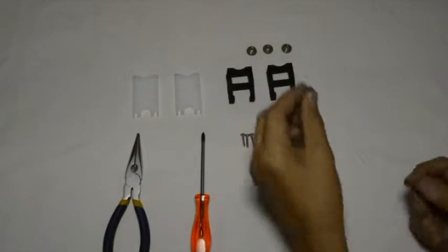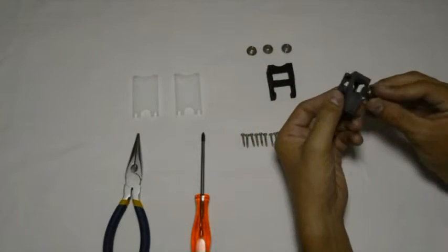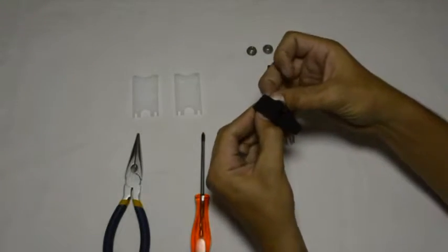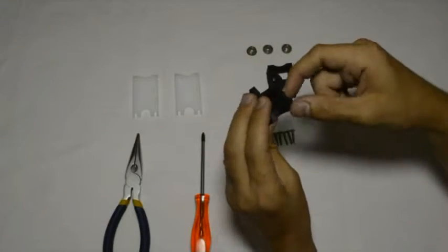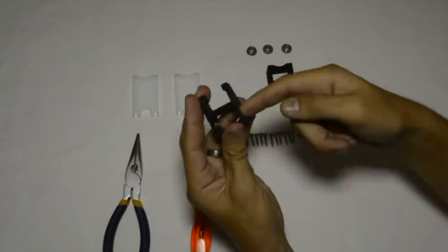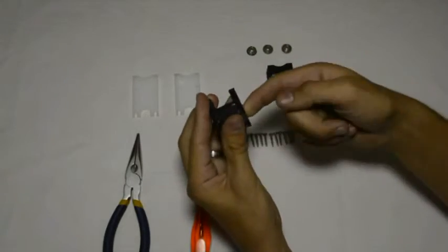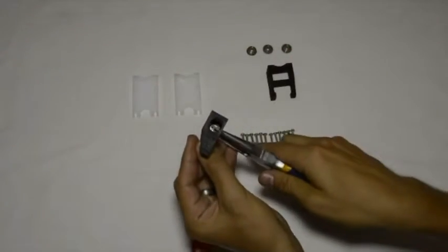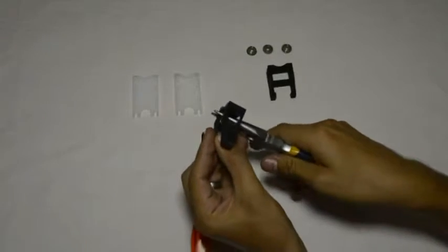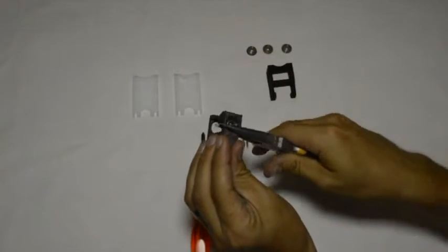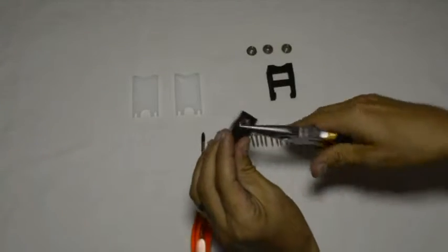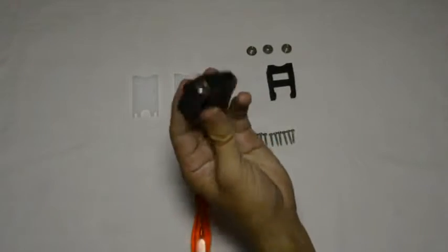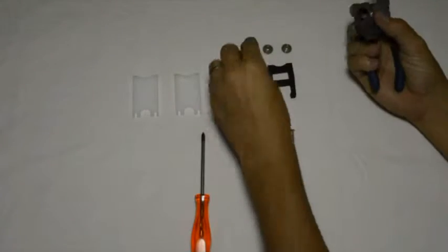Now we will take the flanged bearings and we will push them into the printed components from the inside. Make sure that there's no pieces of plastic that's sticking out inside the hole. And I like to take sharp nose pliers and push them so that they are flush on the inside and flush on the outside. So then it looks like that. So we can do it for all four.